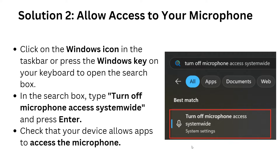In solution two, we have to allow microphone access system-wide. Click on the Windows icon in the taskbar or press the Windows key on your keyboard, then search for 'Turn off your microphone access system-wide'.